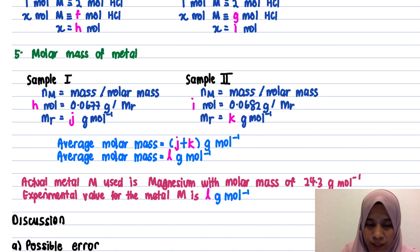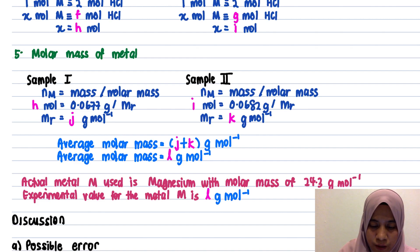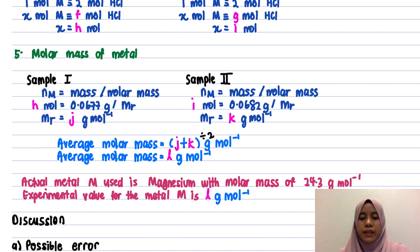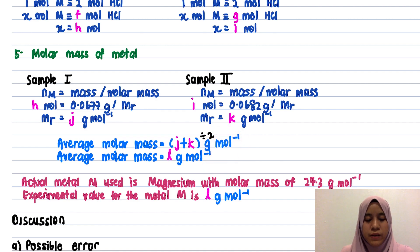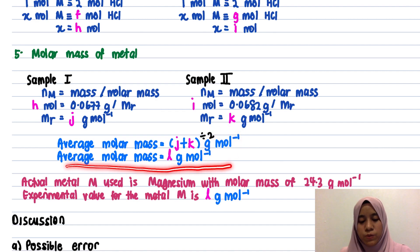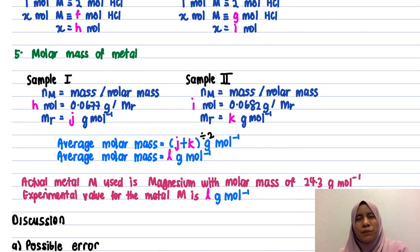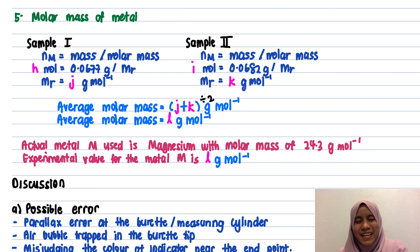Calculate the average molar mass by adding the two molar mass values (J + K) and dividing by 2. Make sure the unit is gram per mole. Hence you get the average molar mass. The calculation is long but step by step it is manageable.